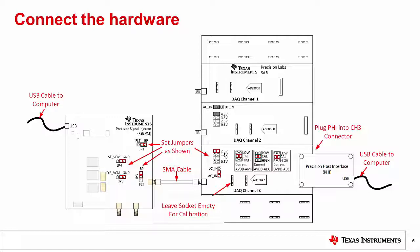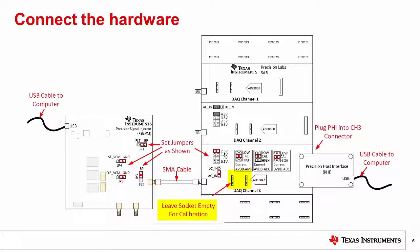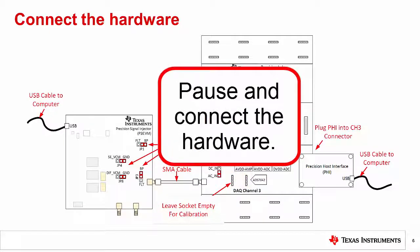For this experiment, we will be using channel 3 on the Precision Labs hardware. First, set the jumpers as shown here. Connect the PSI to the PLabs board using the SMA cable and connect the PHI to the PLabs using the channel 3 connector. Finally, connect the USB cables to the computer. Throughout this experiment, we will test different amplifiers. Always be careful to install the amplifier right side up with the label at the bottom of the coupon card. For now, you can leave the amplifier socket empty. Pause and connect the hardware.